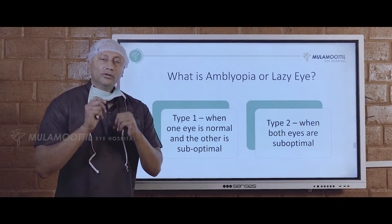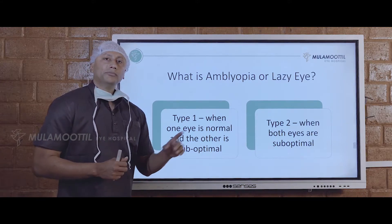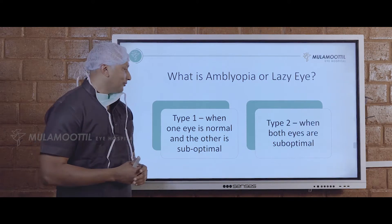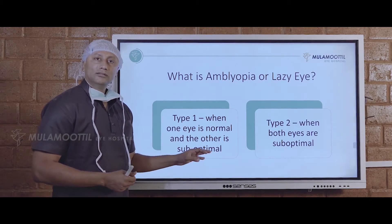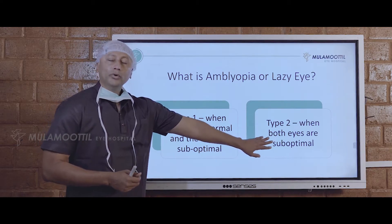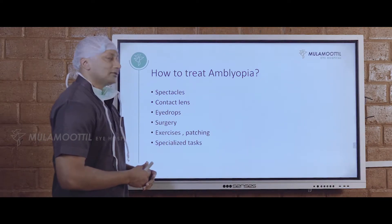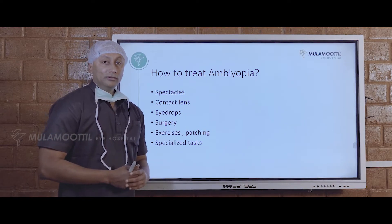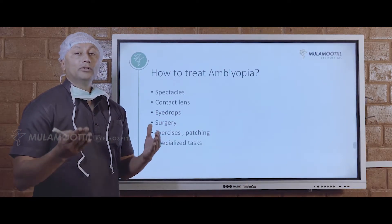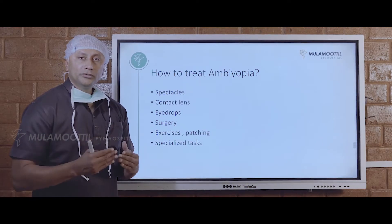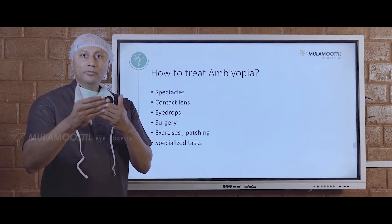What happens if Stereopsis is not there? That is usually because there is something called amblyopia or lazy eye. When one eye is normal and the other eye is suboptimal, or when both eyes are suboptimal, amblyopia comes. Can we treat amblyopia? Definitely. Why do we treat amblyopia? Because Stereopsis is our ability to perceive things together in three dimensions.